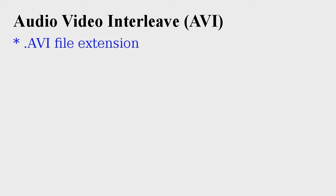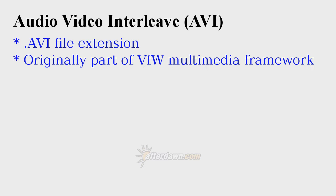We'll start with Audio-Video Interleave, or AVI. AVI files almost always have a file extension of .AVI. AVI is one of the simplest multimedia containers, and simultaneously one of the most confusing. That's largely due to its origins as part of the old VFW, or Video for Windows, framework.